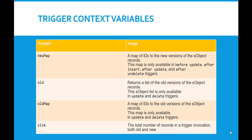Similar to the difference between new and newMap, remember the difference between old and oldMap. old returns a list of the old versions of the SObject records, whereas oldMap is a map of IDs to the old versions of the SObject records. Both old and oldMap are only available in update and delete triggers.